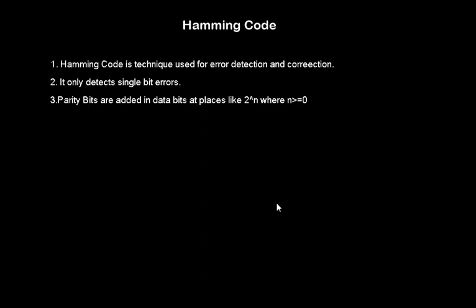So if there is a burst error, by that I mean two or more bits are flipped or are erred, then we cannot find out the error in that case by using Hamming code. And number three is parity bits are added in data bits.